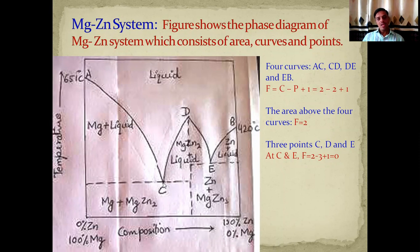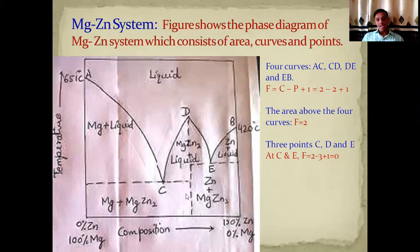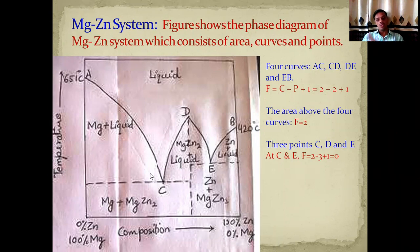At point C, three phases exist in equilibrium: solid magnesium, liquid phase, and solid MgZn₂. At point E, three phases exist in equilibrium: liquid state, solid MgZn₂, and solid zinc. Since three phases exist in equilibrium at C and E, and the number of components is 2, applying the reduced phase rule: F = 2 − 3 + 1 = 0. Therefore the system is zero-variant at points C and E.